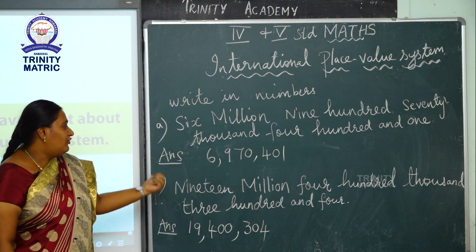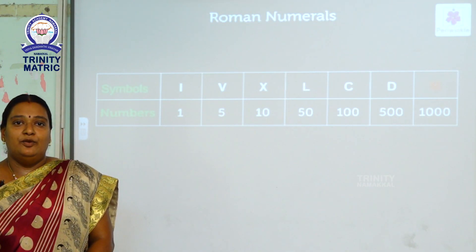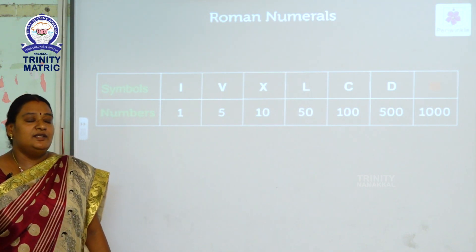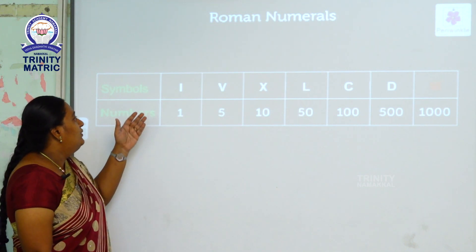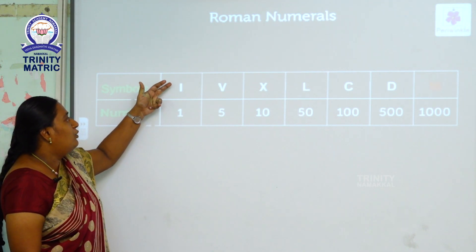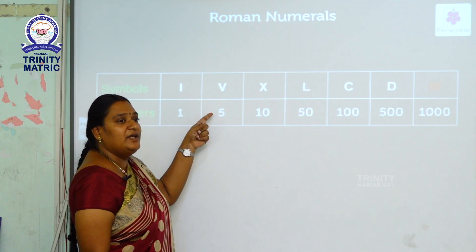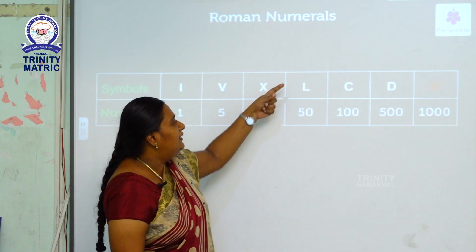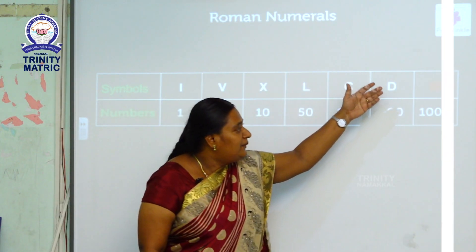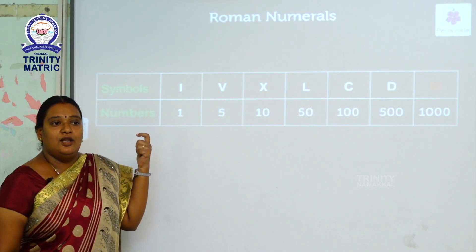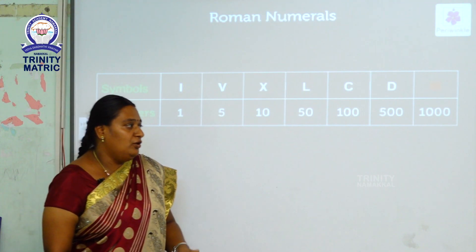Next topic is Roman numerals — the last topic of this first unit. You already know this topic well. The Roman numeral values are: I is 1, V is 5, X is 10, L is 50, C is 100, D is 500, and M is 1000. Using this table we are going to write Roman numerals and convert them to Hindu-Arabic numerals.